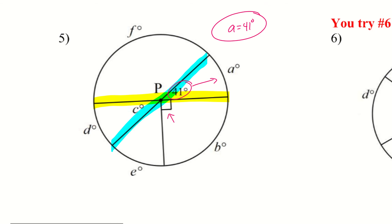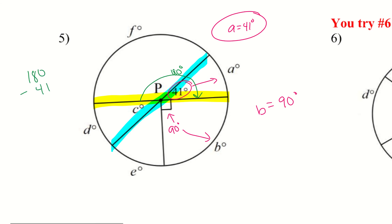I also see I have this box — remember that equals 90 degrees. So b equals 90 degrees. Now let's find f. I have a straight line — the yellow line — so that whole thing is 180 degrees. To find that small part, I take 180 and subtract 41, which gives me 139 degrees. So f equals 139 degrees.